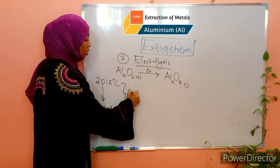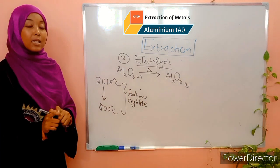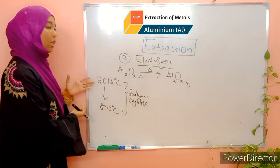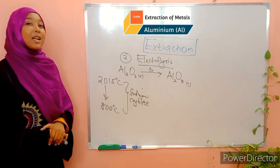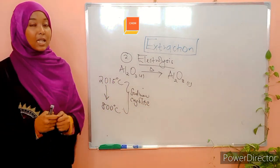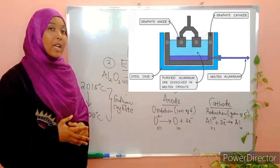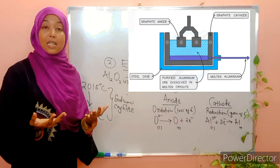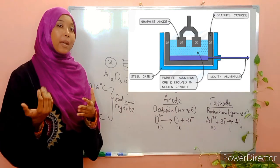This is sodium cryolite. A common exam question asks: what is the purpose of adding sodium cryolite during the extraction of aluminium? It lowers the melting point of aluminium oxide from around 2,000°C to 800°C. Once we have aluminium-3-oxide in liquid state, electrolysis can take place. We have two electrodes — the anode and the cathode — and these electrodes are made from graphite. Graphite is preferred because it is inert and does not react with the compounds formed at the electrodes, and it is also relatively cheaper compared to other electrode materials.